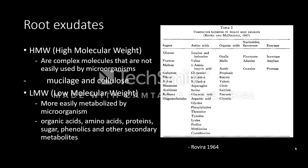The next category is low molecular weight compounds, which are easily metabolized by microorganisms. These are sugars, organic acids, phenolics, and secondary metabolites. On the table, we find different types of compounds found in wheat root exudates.